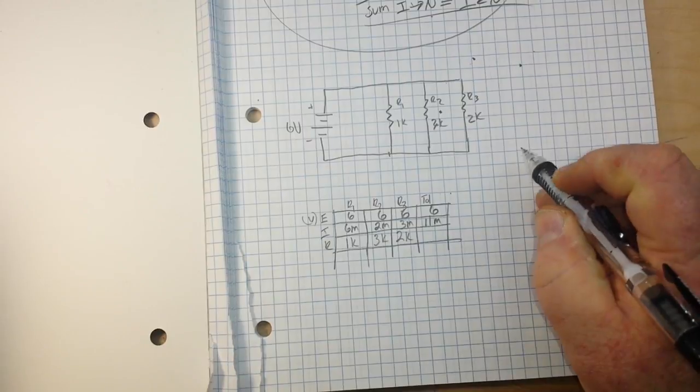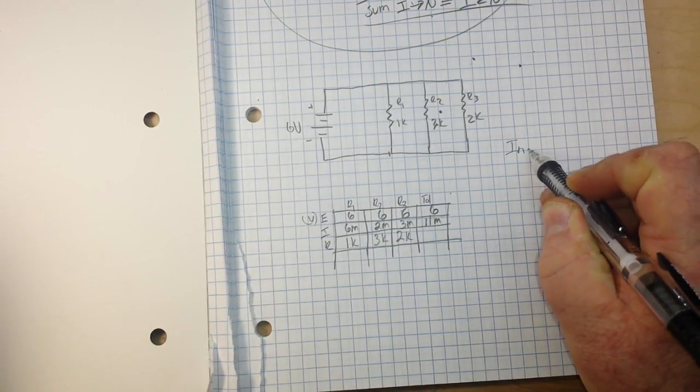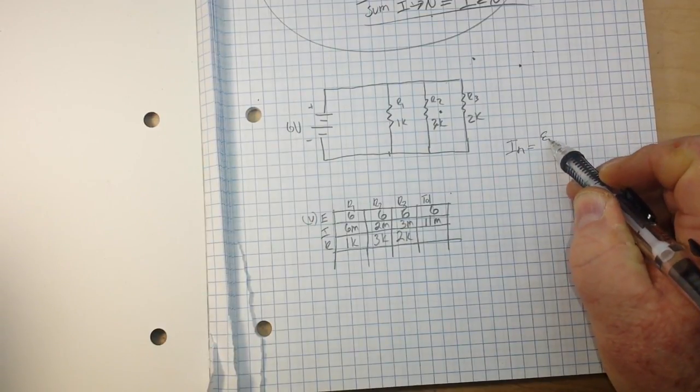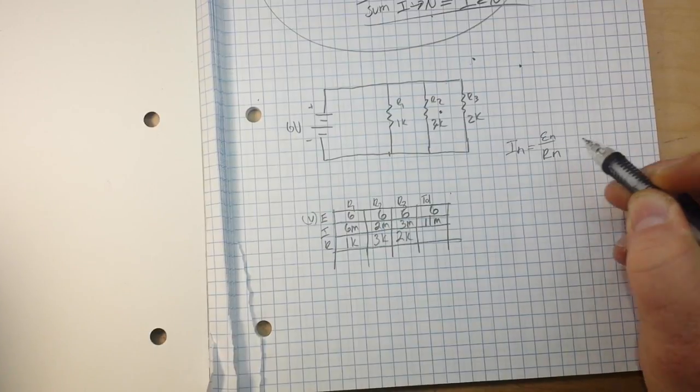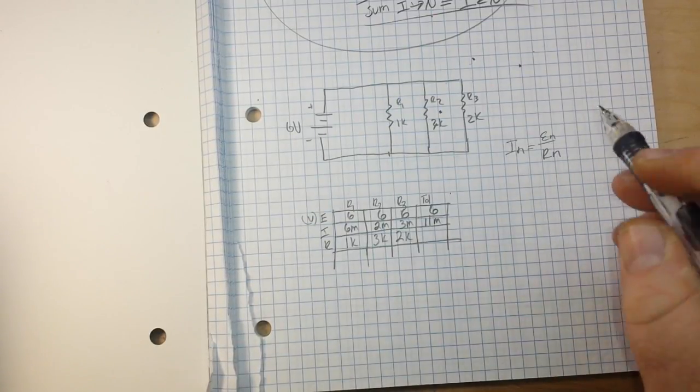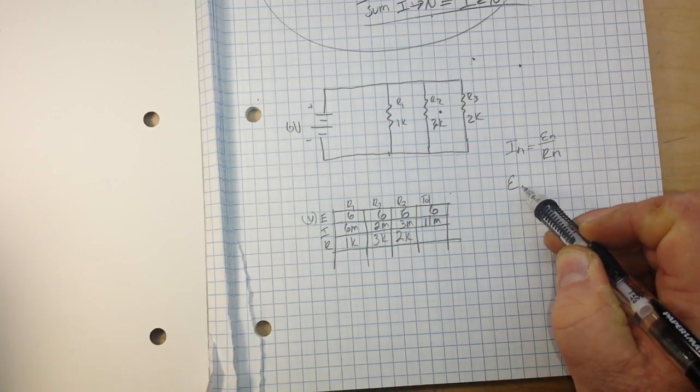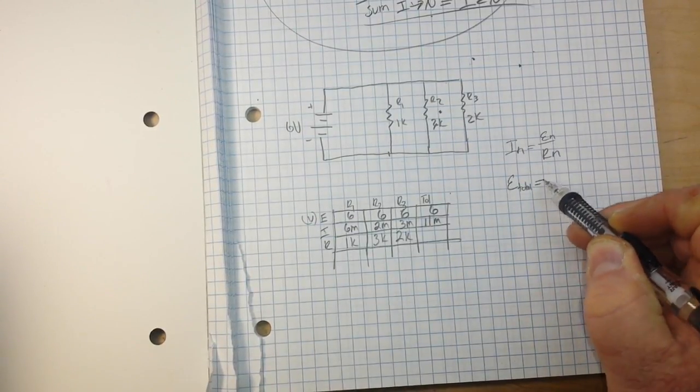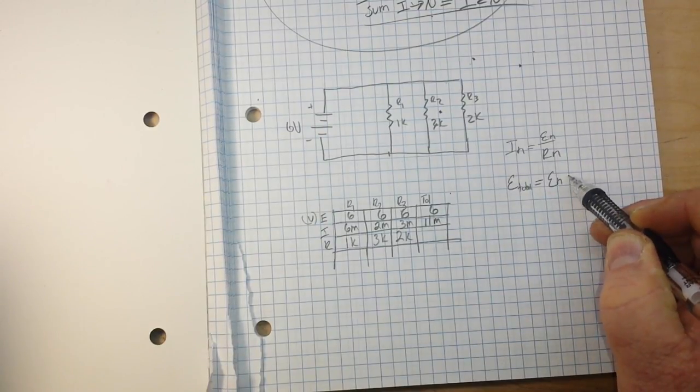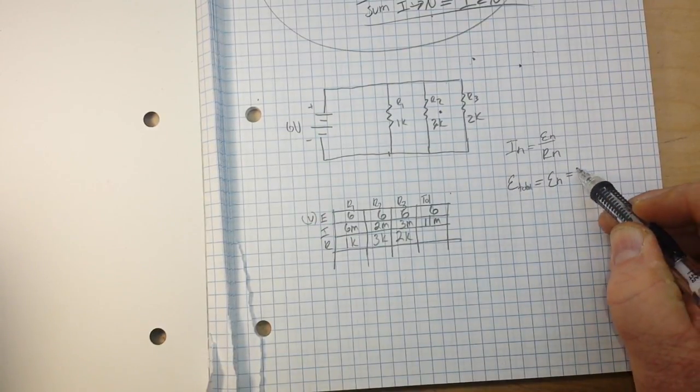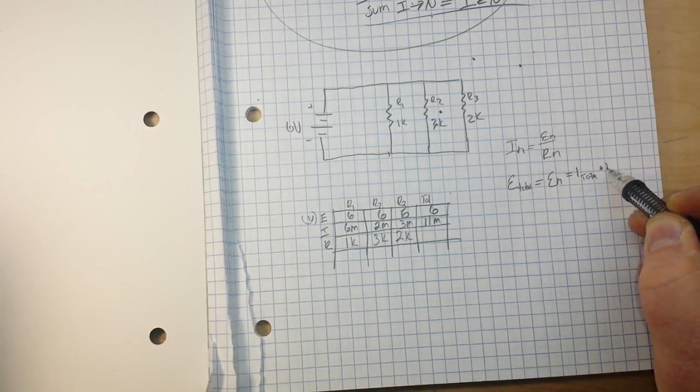Okay, so we know that the current through any resistor is En divided by Rn. And we know that our voltage in a parallel circuit equals voltage En equals I total times R total.